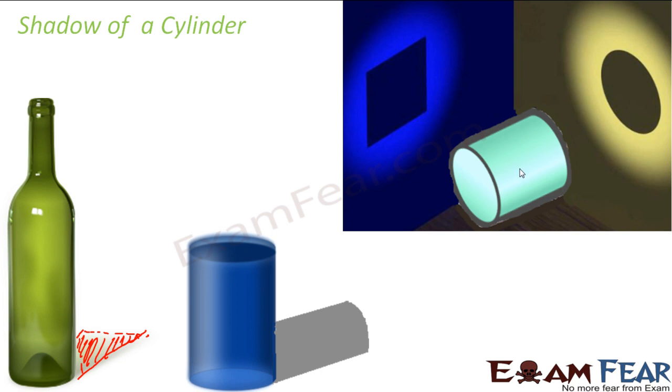For example, in this case you see, this is a cylinder and we know a cylinder has two circular surfaces and there is a rectangular surface. In fact, a rectangle and two circles form the net for the cylinder.